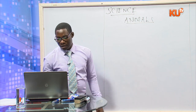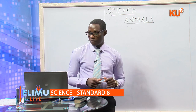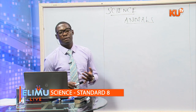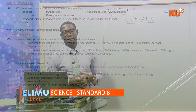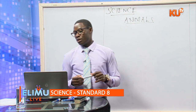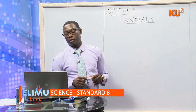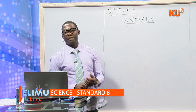In class 6, we talk about animal feeds. Animal feeds include pasture, fodder, concentrate, and conserved feeds. Conserved feeds include hay and silage. Hay is dried and stored under the sun, while silage is prepared where there is no sun. We also have methods of grazing, which is a common question.